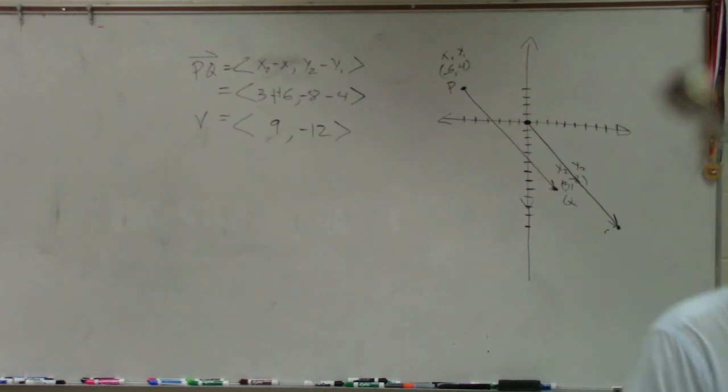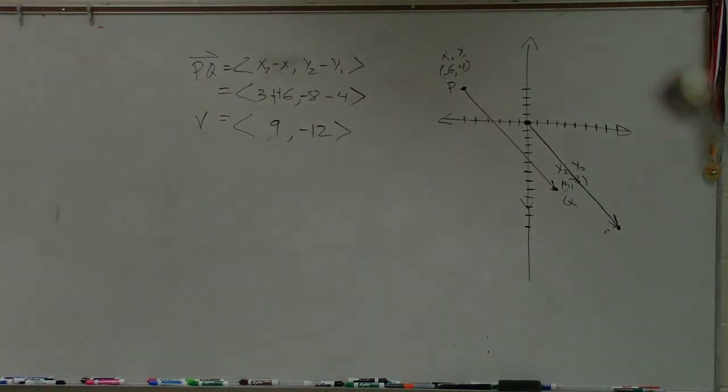So that's how you transfer a vector into component form. Thanks. Does that make a little sense? Pretty easy.